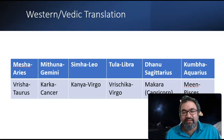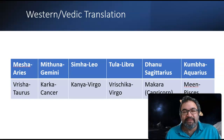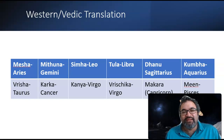Capricorn is Makar or Makara, Aquarius is Kumbh or Kumbha, and Pisces is Meena. That covers all 12 signs of the zodiac.